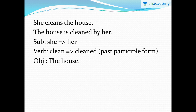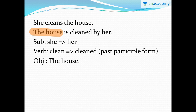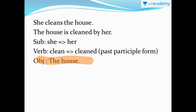Another example: 'She cleans the house.' Subject is 'she', verb is 'clean', object is 'house.' The object comes at the beginning of the passive voice — 'The house.' 'Clean' in past participle form is 'cleaned.' Since 'the house' is singular, we use 'is': 'The house is cleaned by her.' The subject 'she' moves to the end and changes to 'her.' Object remains the same — you can never modify an object.